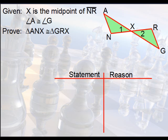Let's look at this example here. We have two given pieces of information: X being the midpoint of segment NR, and angle A being congruent to angle G. Knowing that, please prove that the triangles are congruent.